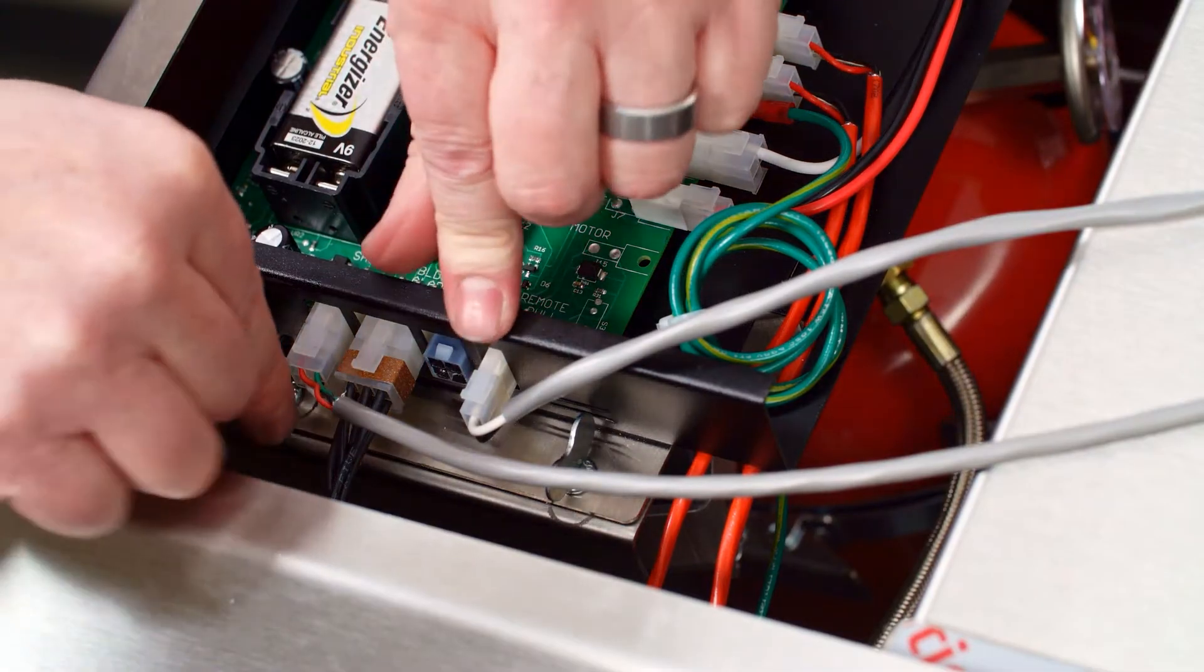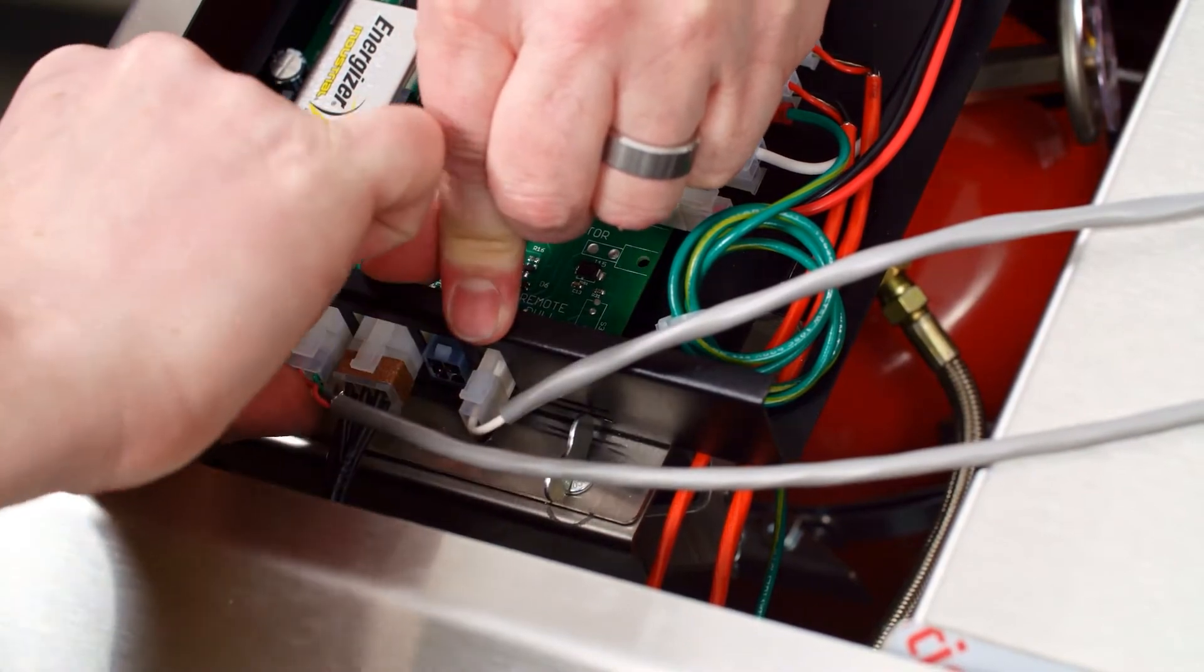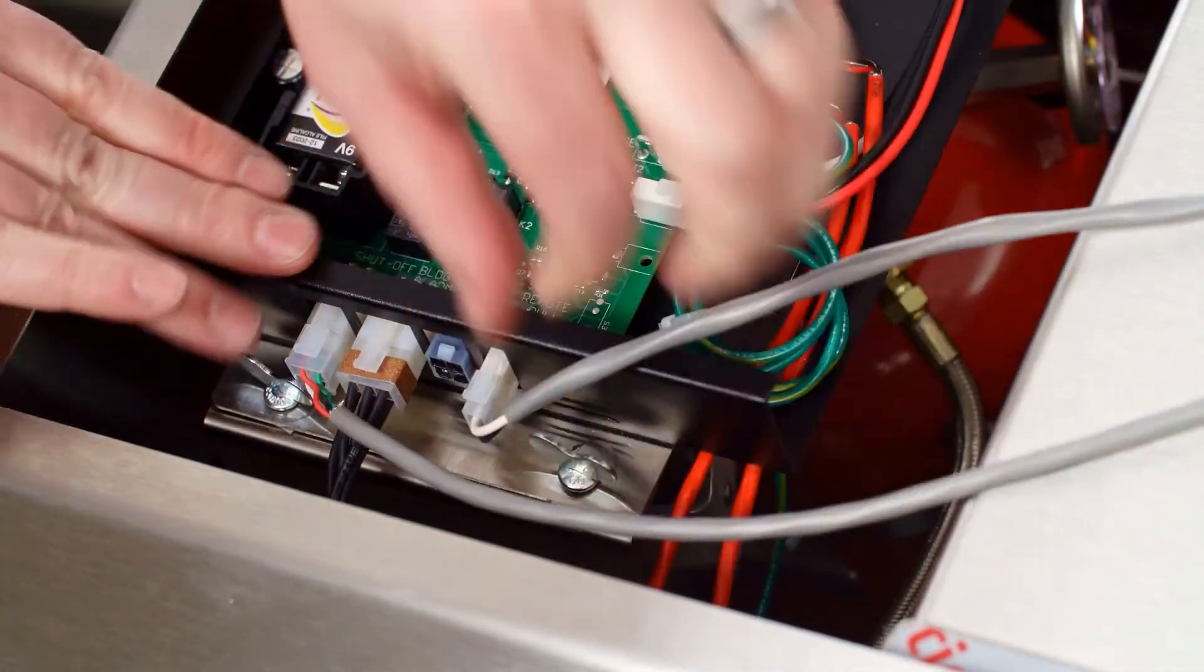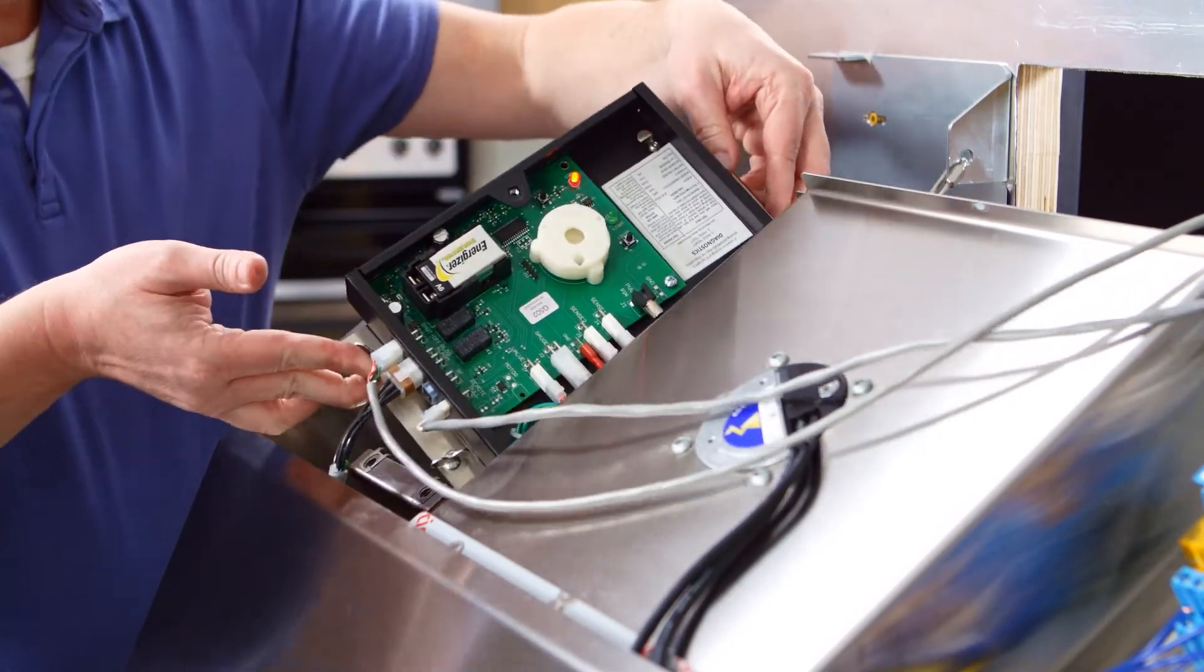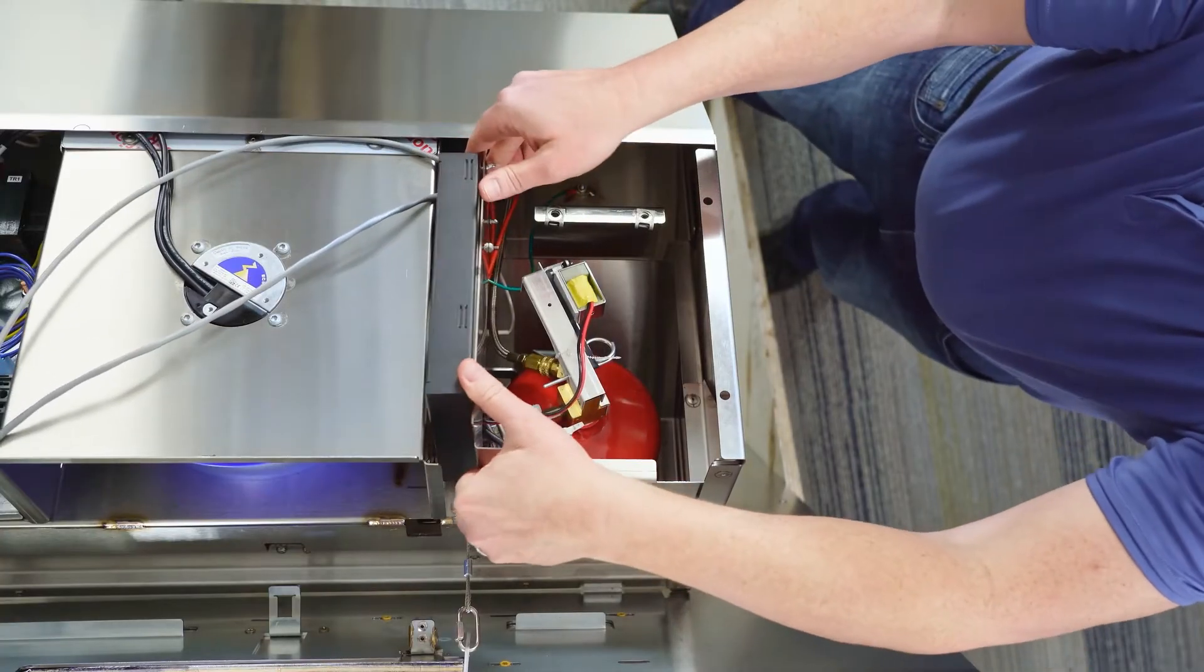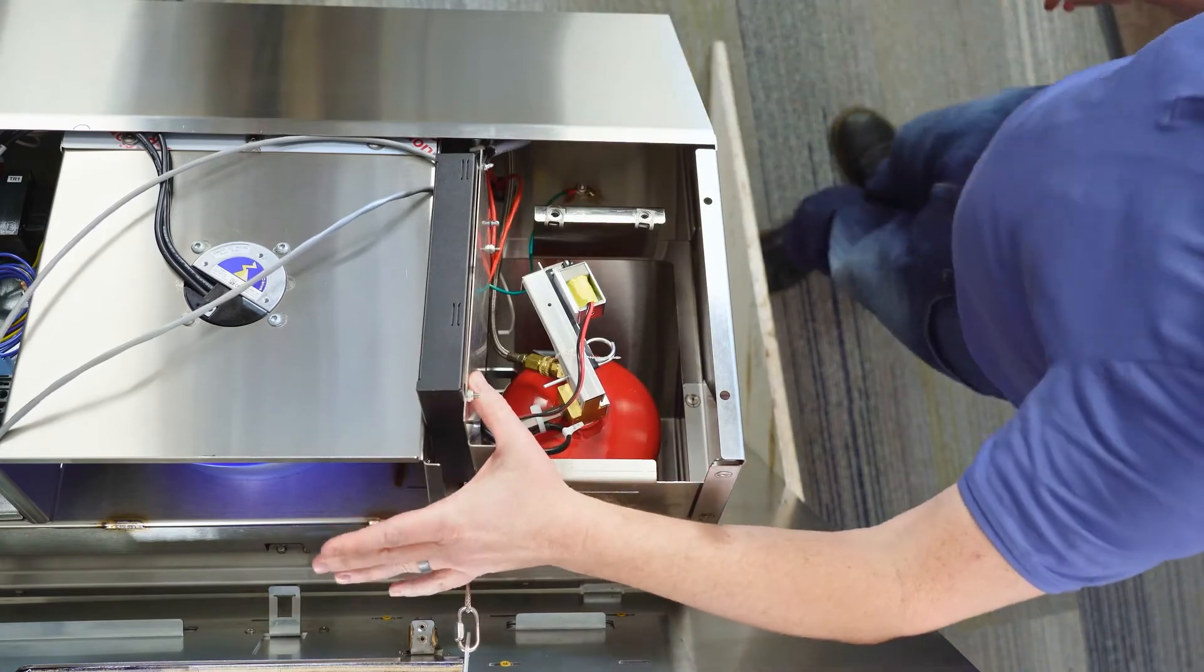Verify the disconnect is powered and all burners on the range are off. Remove the wing screws that hold the fire suppression board enclosure in place. Without disconnecting any cables, expose the agent tank by sliding the control board assembly towards the middle of the hood and down so it's next to the tank.